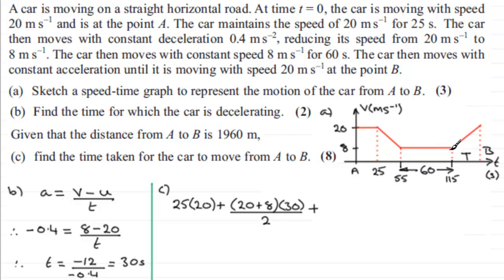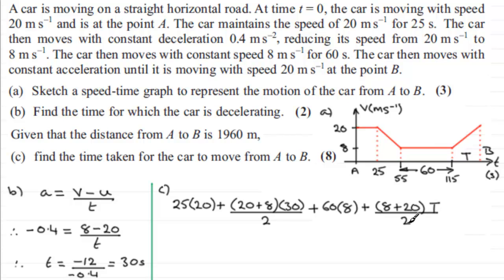Finally, the last trapezium: the sum of the parallel sides is 8 plus 20, multiplied by the distance apart T, all divided by 2. This total area under the graph represents the total distance covered, so we can say this equals 1960.